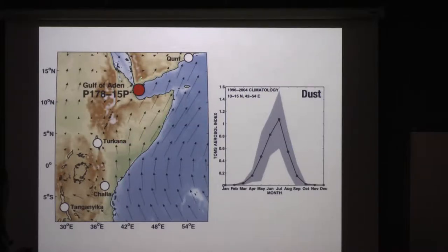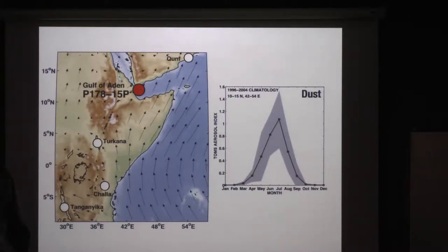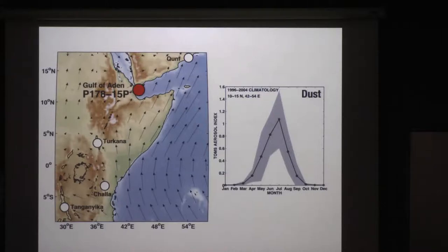Because most of the dust is coming from the Horn — not much from, say, Saudi Arabia — we can learn something about climate over land even though we're in the ocean. We know this on the basis of neodymium isotopes and other indicators that tell us where most of the dust is coming from. So we really are looking at the Horn of Africa.